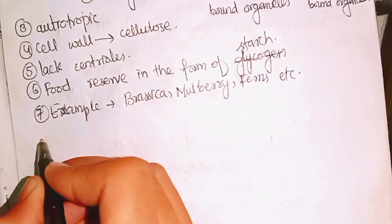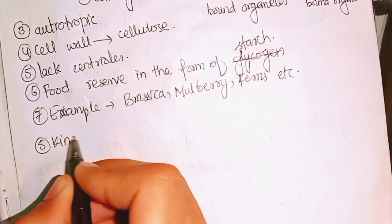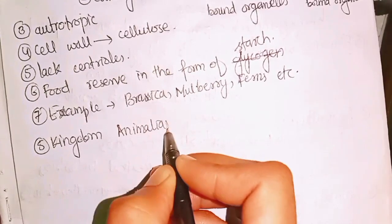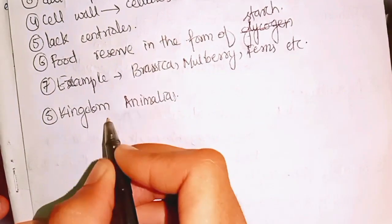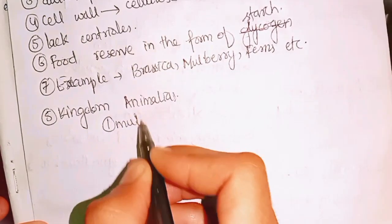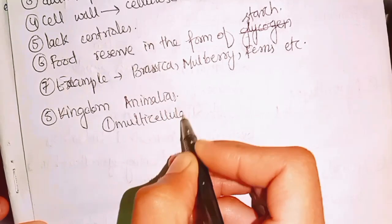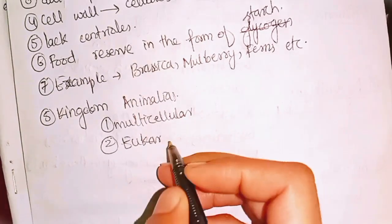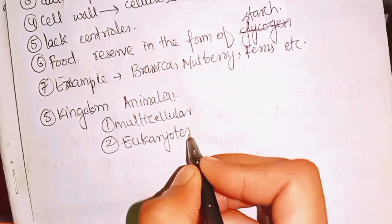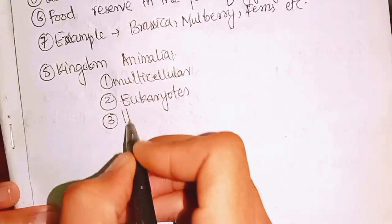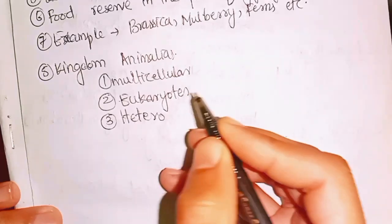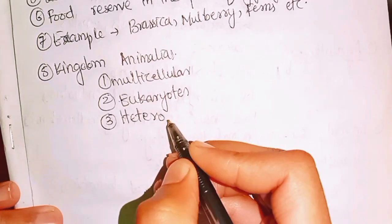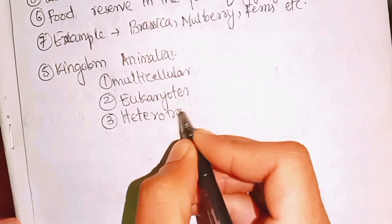The fifth and last kingdom is Kingdom Animalia. Characteristics of Kingdom Animalia: they are multicellular, eukaryotic with membrane-bounded organelles, and heterotrophic — they cannot prepare their own food.